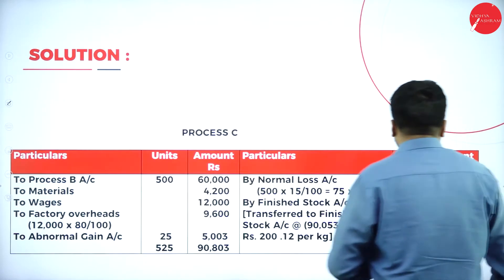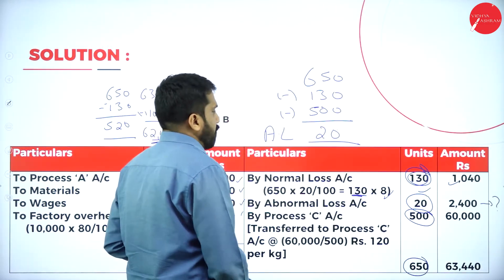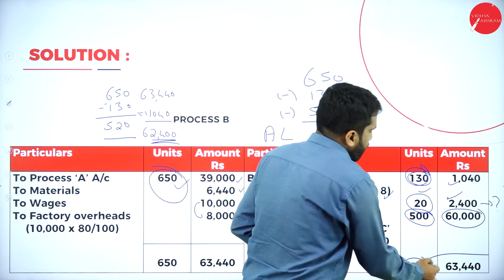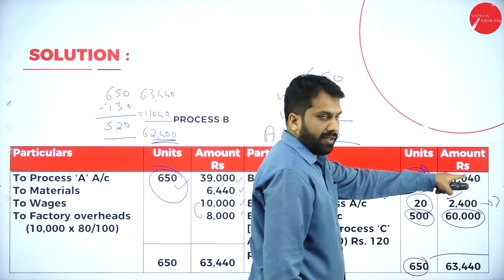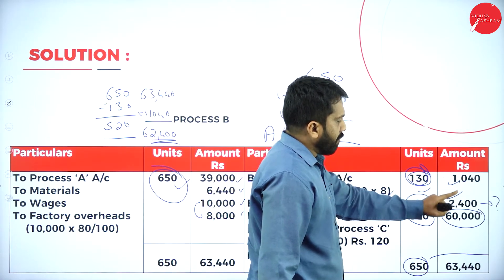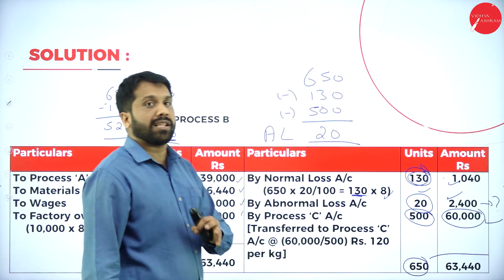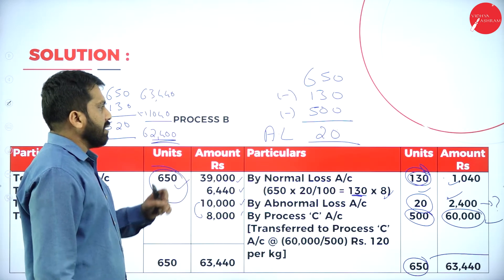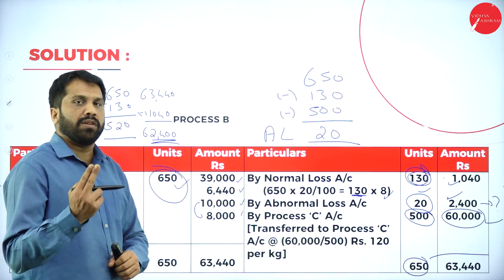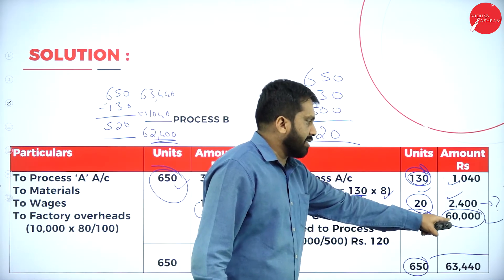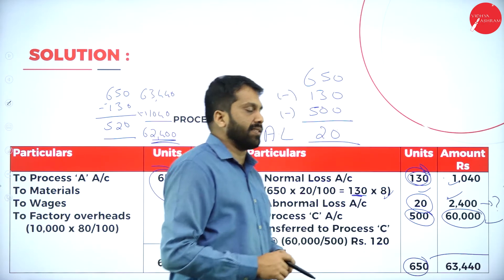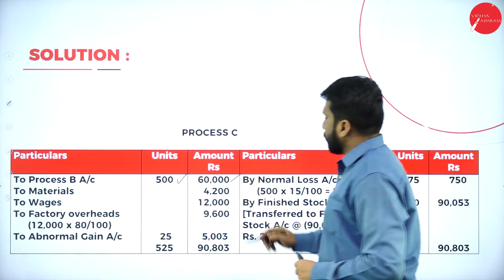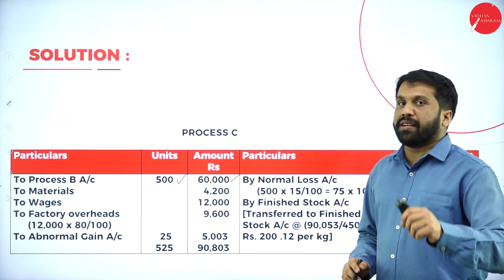Closing Process B: total Rs. 63,440 minus normal loss value Rs. 1,040 and abnormal loss Rs. 2,400 gives output of Rs. 60,000 for 500 kg. This Rs. 60,000 (500 kg) becomes the opening balance — the input — for Process C.